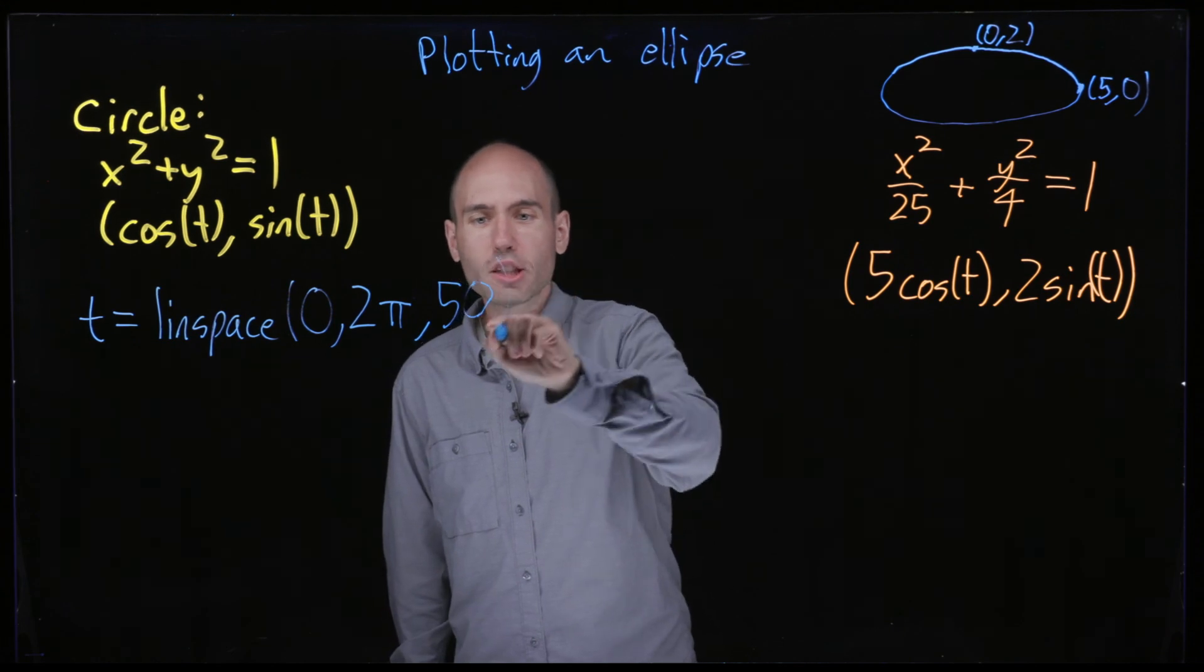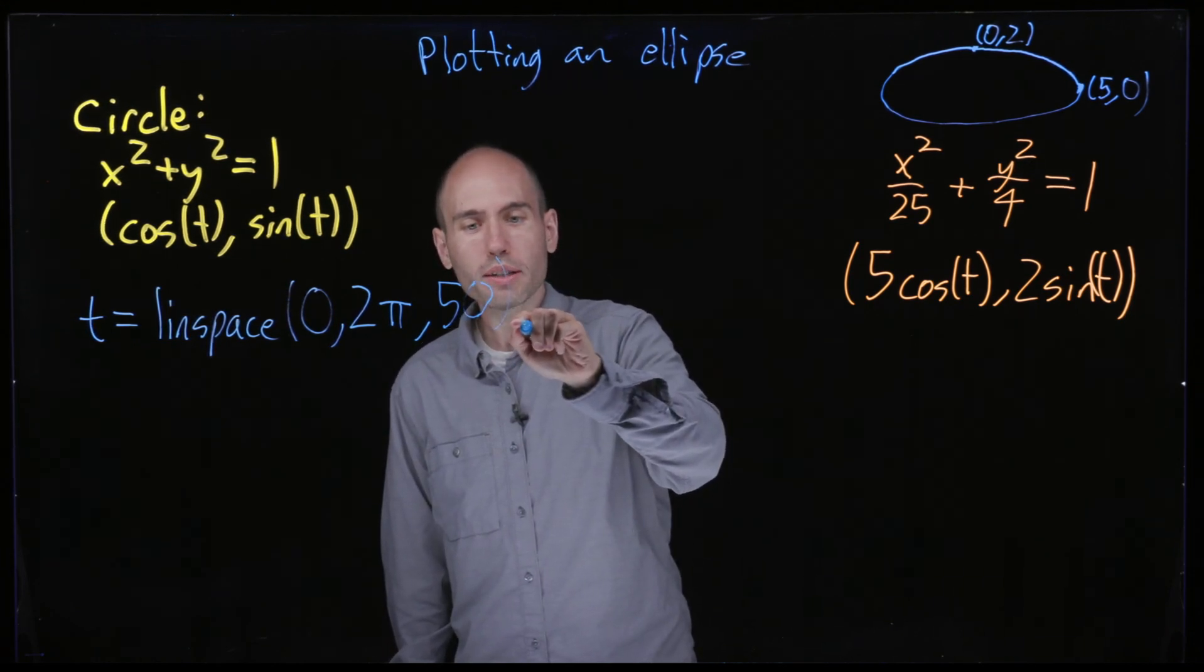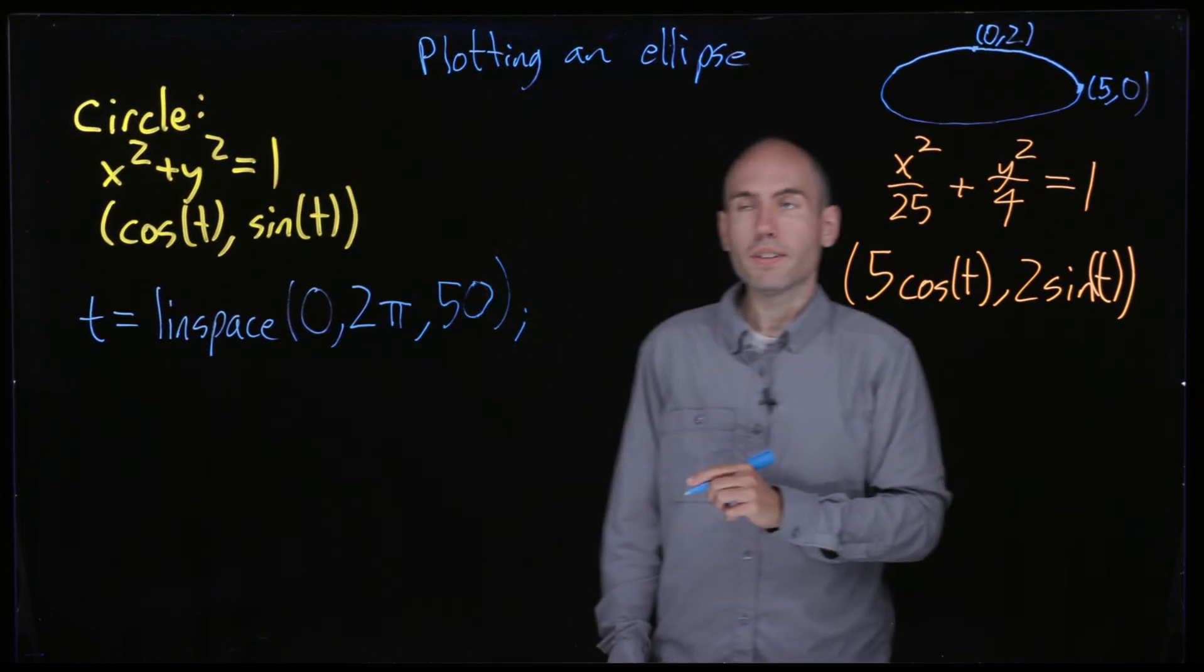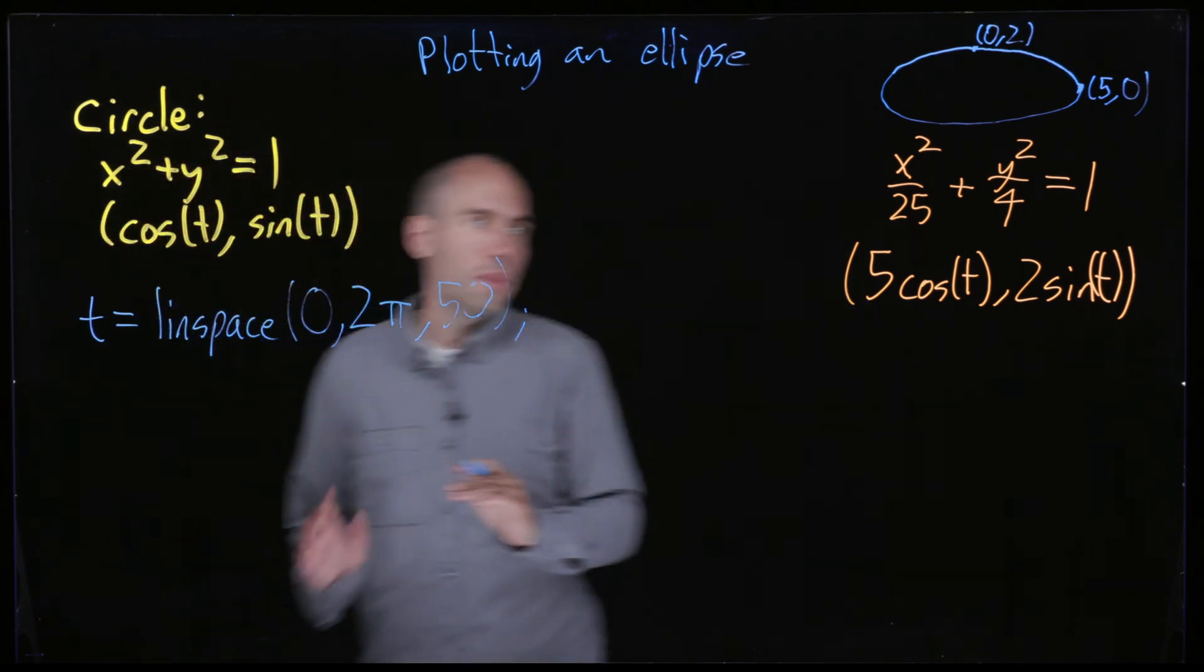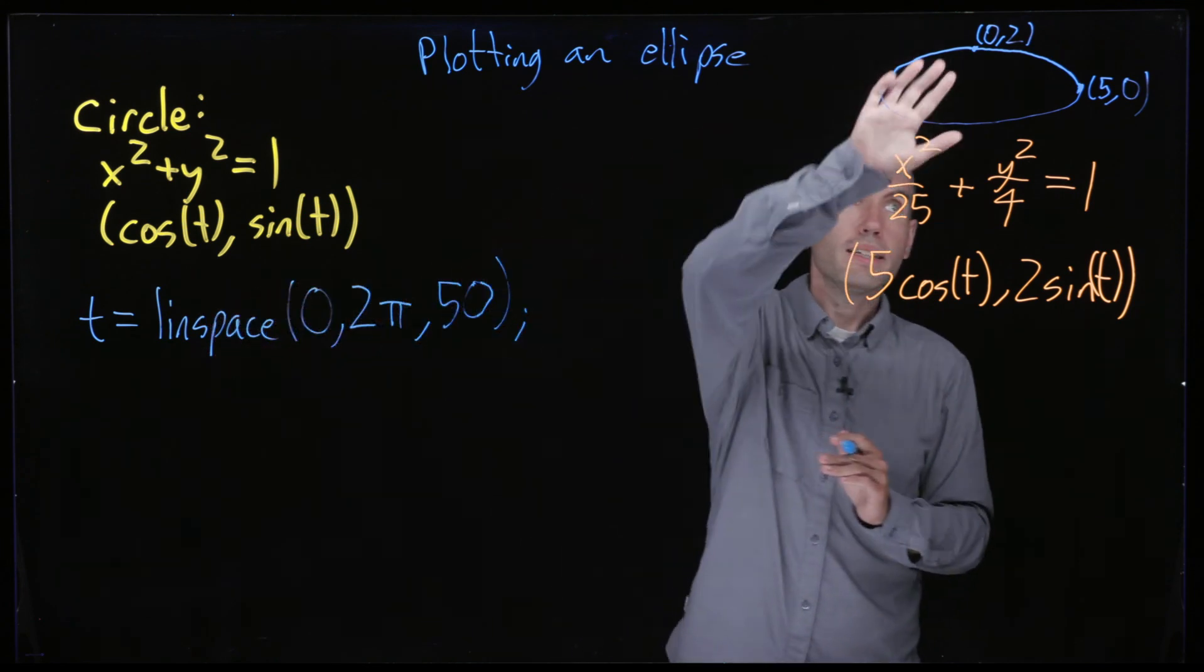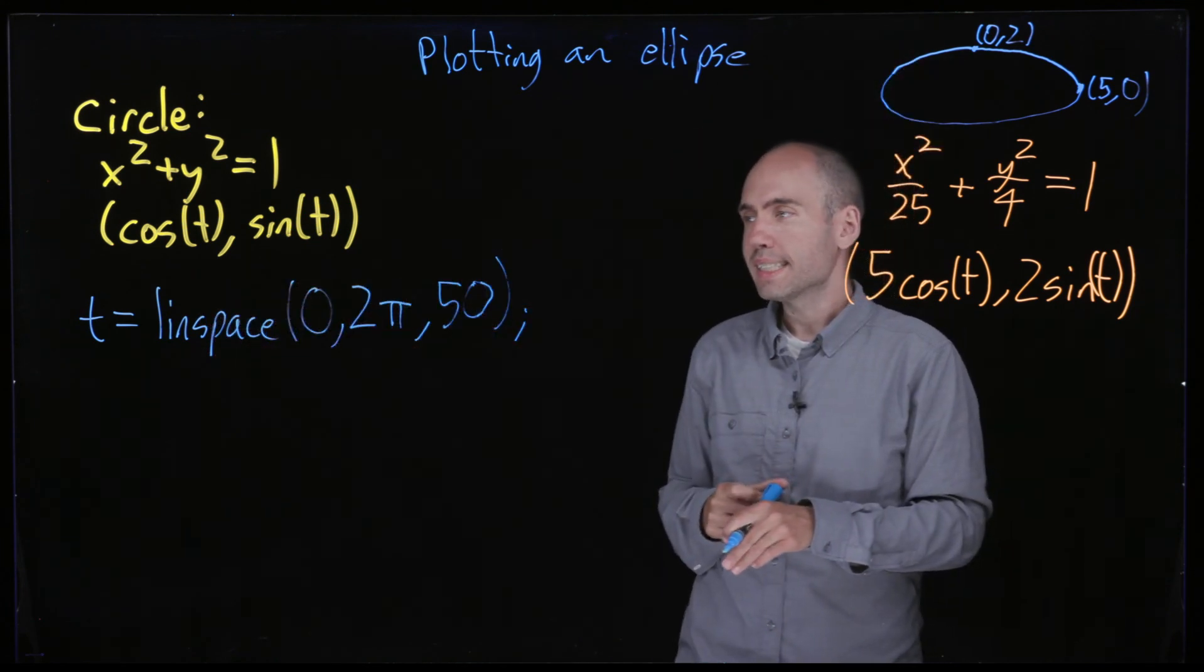And these parameterizations they're for t from 0 to 2 pi radians, so start at 0, end at 2 pi and let's use 50 sample points. If I want the ellipse to look smoother then I can use more sample points, but 50 should be enough.